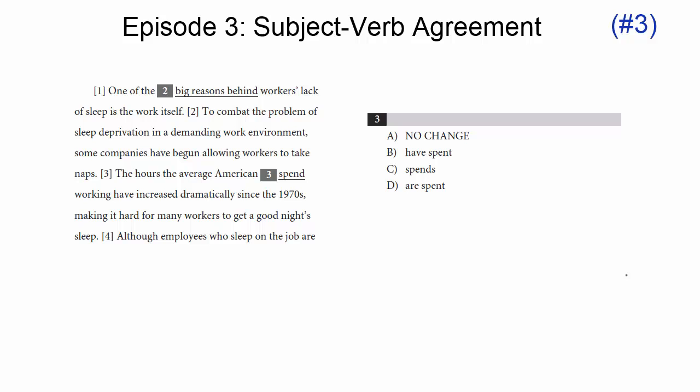So let's check out number three. The hours the average American spend working have increased dramatically since the 1970s, making it hard for many workers to get a good night's sleep. So you might have heard in the reading of that that there's something weird about three. But what?